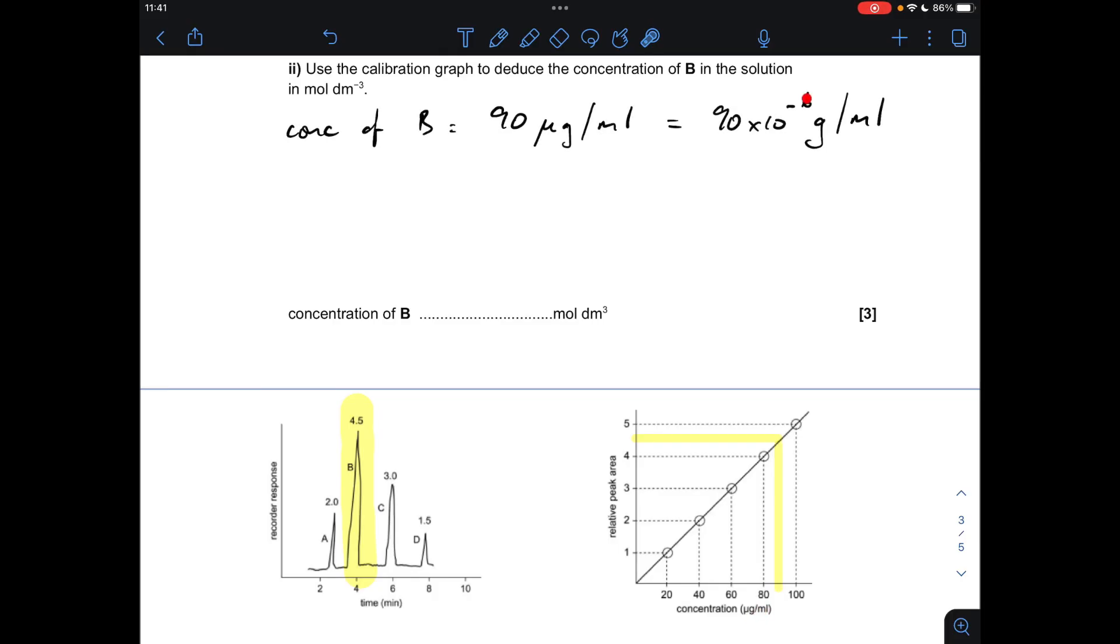Next thing I've done is just multiply that by 10 to the minus 6 to go from micrograms to grams. Next thing I'm doing is going from milliliters to decimeters cubed. There's a thousand milliliters in a liter, and a liter is a decimeter cubed. So if we multiply that by a thousand, we need to multiply this by a thousand. So it's 90 times 10 to the minus 3 grams per decimeter cubed. We're nearly at moles per decimeter cubed now, so just need to turn this into moles.